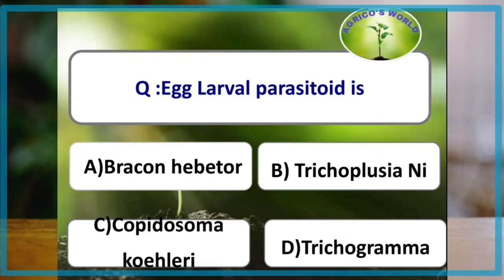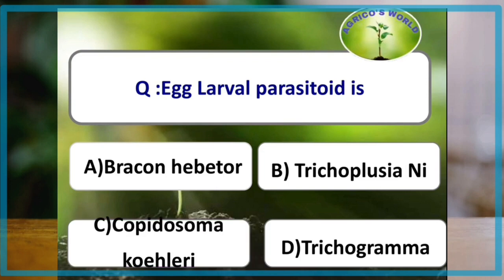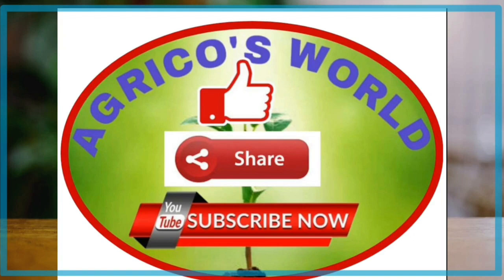Which one of the following is an egg-larval parasitoid? The answer is Copidosoma koehleri. An egg-larval parasitoid is one which deposits eggs in the host egg, but development and emergence are not completed until the host larval stage is reached. Thank you — please like, share, and subscribe to our channel Agricose World.